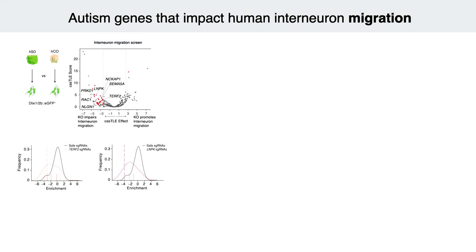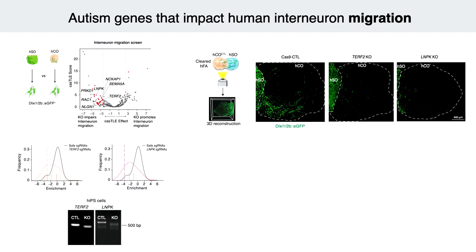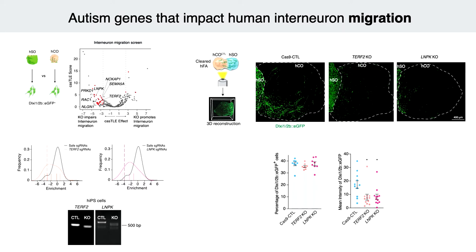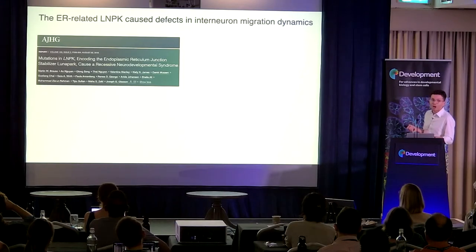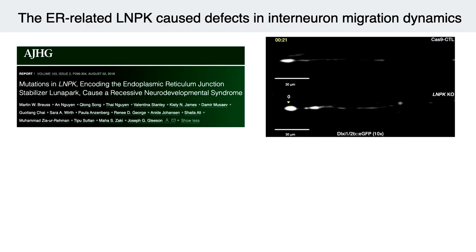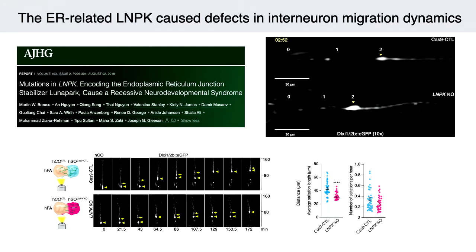We identified two genes that specifically affect interneuron migration — they don't affect interneuron generation, but they do affect the proportion of interneurons moving to the other side. One of these genes is called Luna Park, which causes severe epileptic encephalopathy in children. When you knock it out, you see a beautiful defect where cells fail to undergo migratory jumps — their jumps are normal in length but they jump less often. It turns out this gene is important for maintaining ER structure, which is surprising because ER has not generally been associated with interneuron migration.